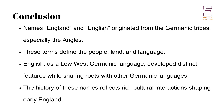The names England and English trace their origins to the Germanic tribes that migrated to Britain in the early Middle Ages, particularly the Angles. Over time, these terms came to define not only the people and the land, but also the language that evolved from the dialects spoken by the Angles, Saxons and Jutes. English as a Low West Germanic language shares many features with its linguistic relatives but also developed unique characteristics that distinguish it from other Germanic languages. The history of these names and the language they represent is a testament to the rich and complex cultural interactions that shaped early England and continue to influence its identity today. This was the discussion on the origins of the names England and English. We will meet in the next video. Until then, goodbye and thank you.